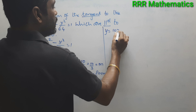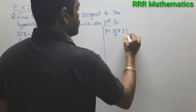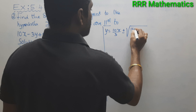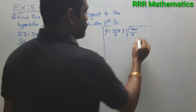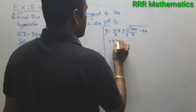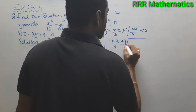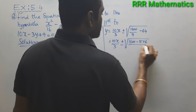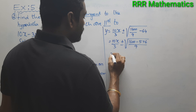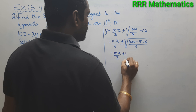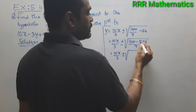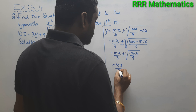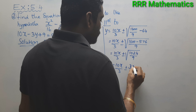Simplifying: y = (10x/3) ± √(1600/9 − 64). Taking LCM, 64 × 9 = 576, so this becomes ±√((1600 − 576)/9) = ±√(1024/9). Taking the square root gives ±32/3, since 32 × 32 = 1024.